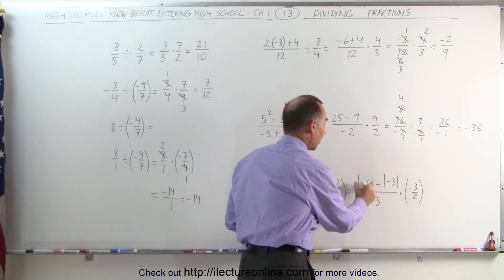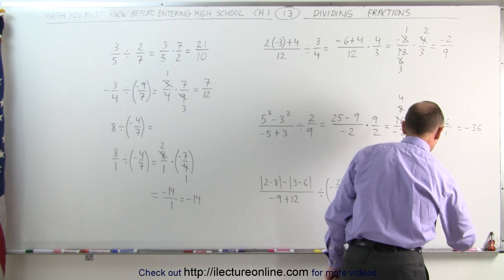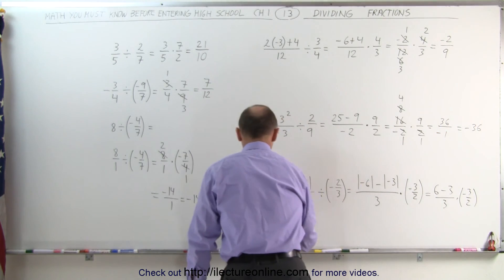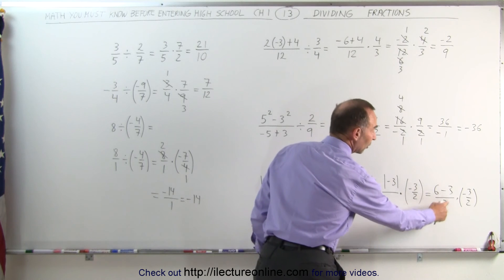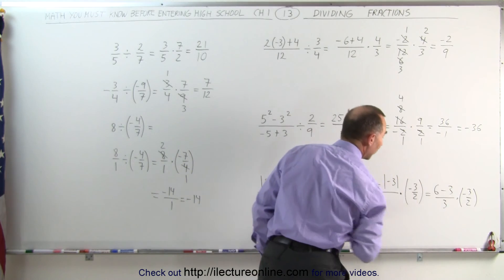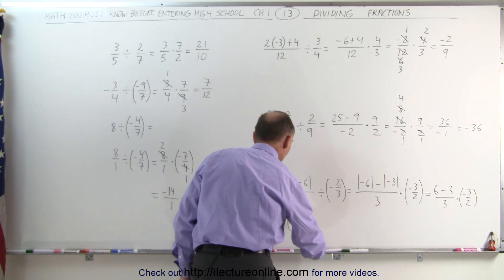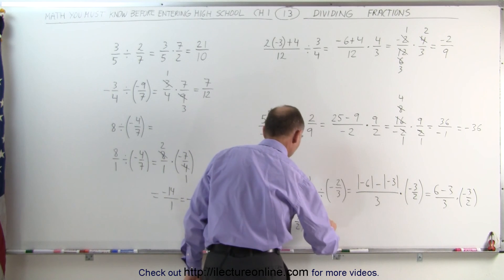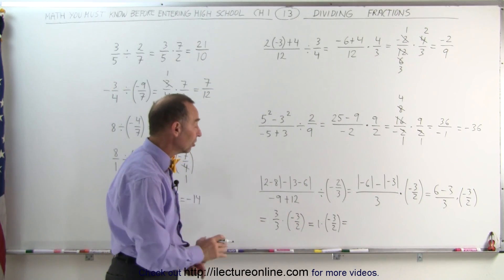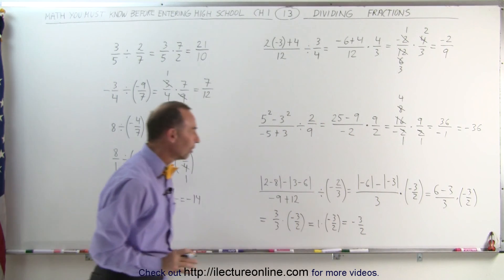Next, the absolute value of negative 6 is positive 6, minus the absolute value of negative 3, which is positive 3. So we have 6 minus 3, divided by positive 3, multiplied by negative 3 over 2. I don't want to cancel the 3s yet, because we still have subtraction in the numerator. First simplify: 6 minus 3 becomes 3, divided by 3, times negative 3 over 2. Then 3 divided by 3 is 1, giving us 1 times negative 3 over 2. By the identity property of multiplication, this simplifies to negative 3 over 2 — the final answer.